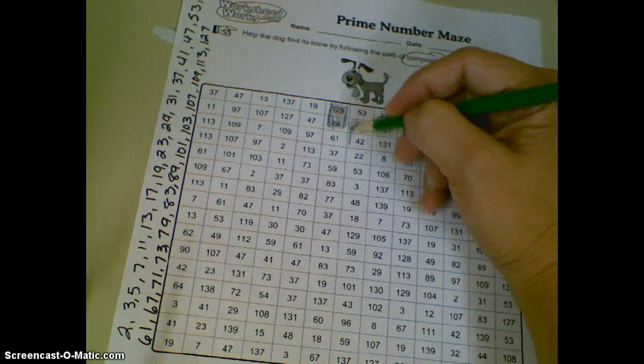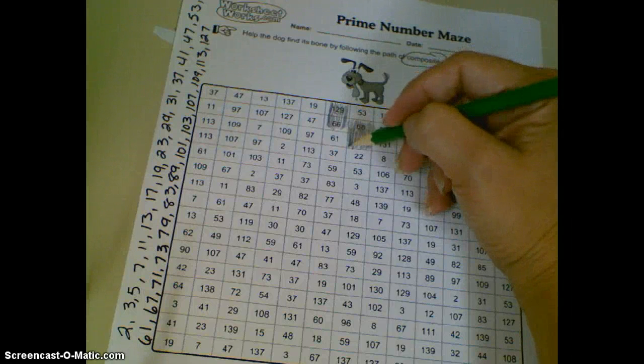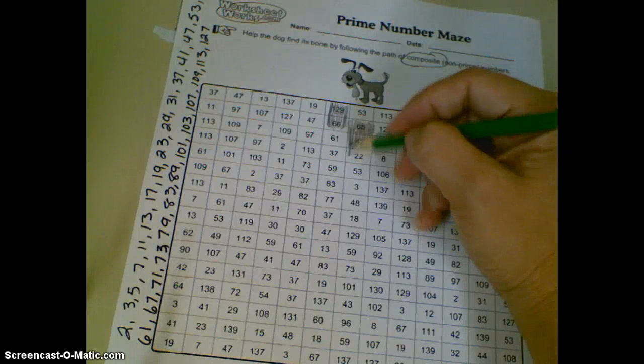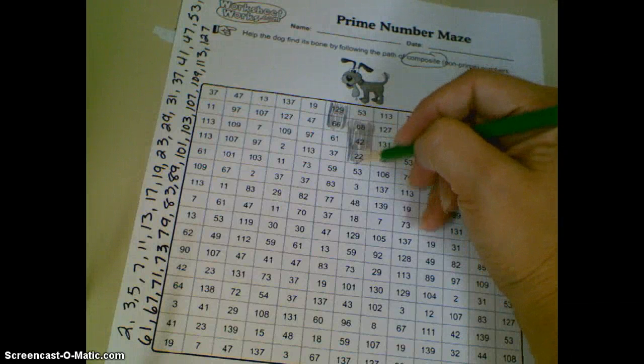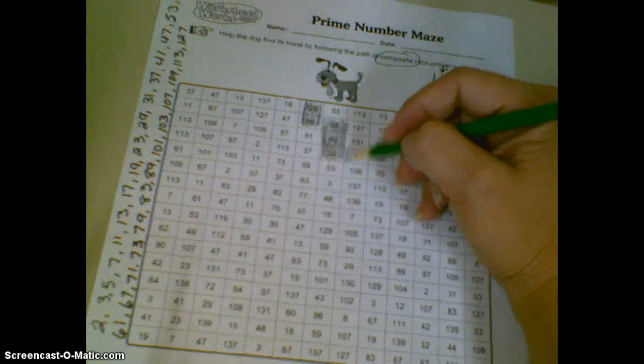42 is a composite number. Remember, all even numbers are composite numbers, except for 2 and 0. 22 is composite, 11 times 2 is 22. 8 is composite, 4 times 2.